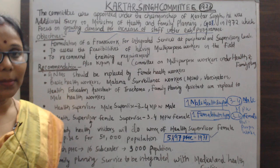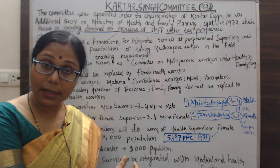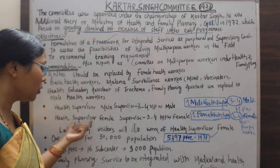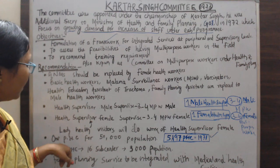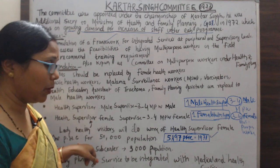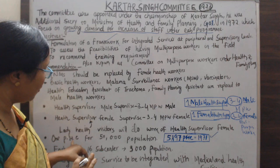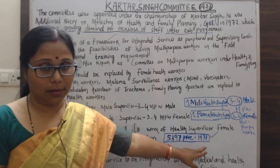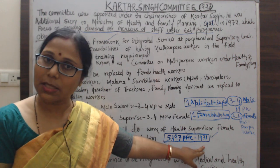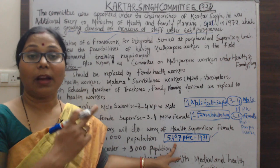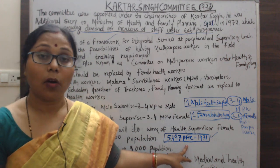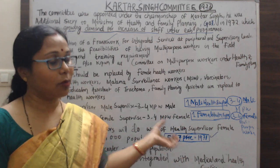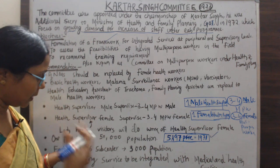In the female category, the Lady Health Visitors who were working at that time were replaced or converted into Female Health Supervisors. According to the recommendation of the Kartar Singh Committee, one PHC (Primary Health Centre) should cover a population of 50,000. Based on the 1971 census, 5,197 PHCs were already established.